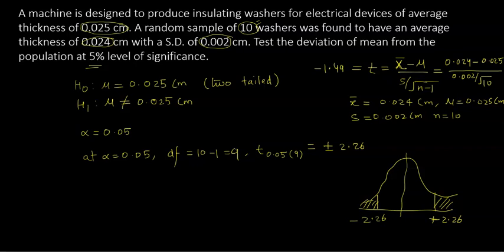Comparing the t-value of negative 1.49 to the critical values of plus or minus 2.262, it falls in the region of non-rejection. Therefore, do not reject H0. The machine is working absolutely fine with this standard deviation.